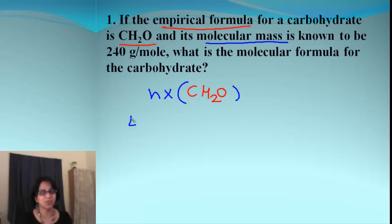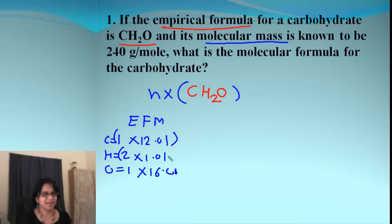let's find out the empirical formula mass. That's 1 carbon, 2 hydrogen, and 1 oxygen. When we add all of that, we end up getting 30.03 grams per mole as our empirical formula mass.